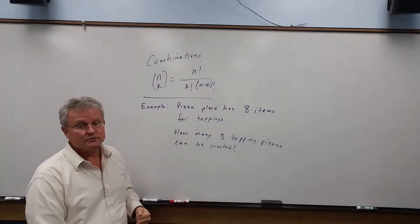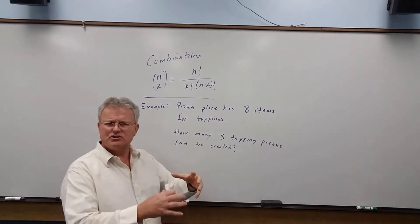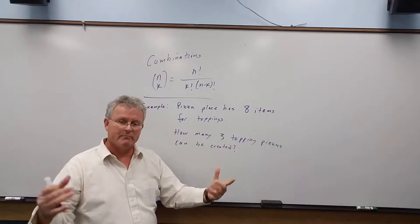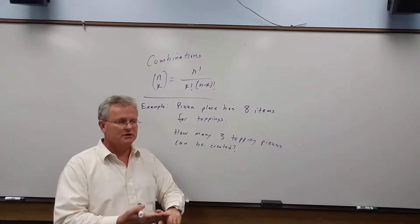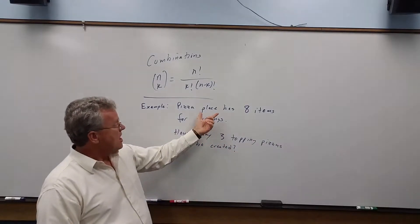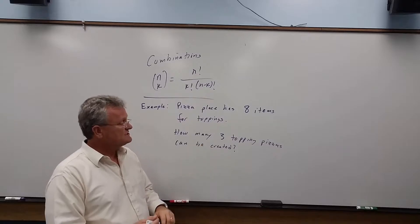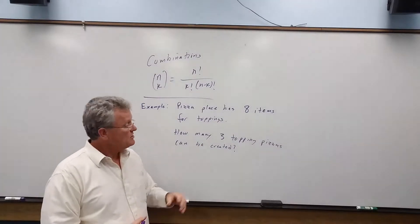Well, let's do an example of using this. Let's say we go to a pizza place and they have a total of eight items to choose from to put on your pizza: pepperoni, mushrooms, onions, green peppers, sausage, whatever. Of those eight, the question is, how many three topping pizzas can be created?